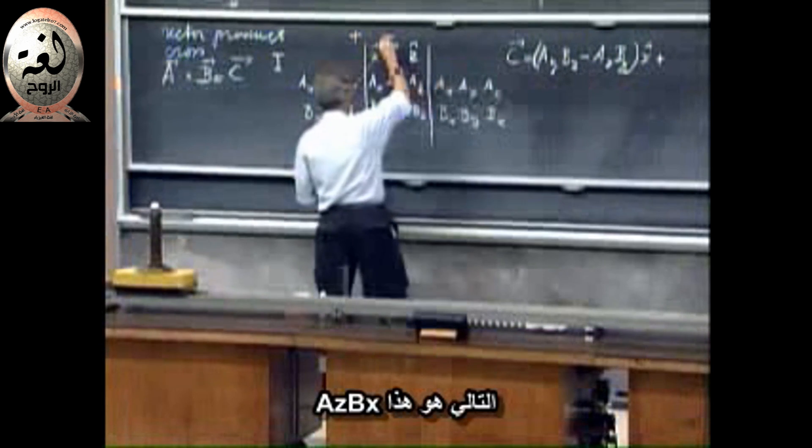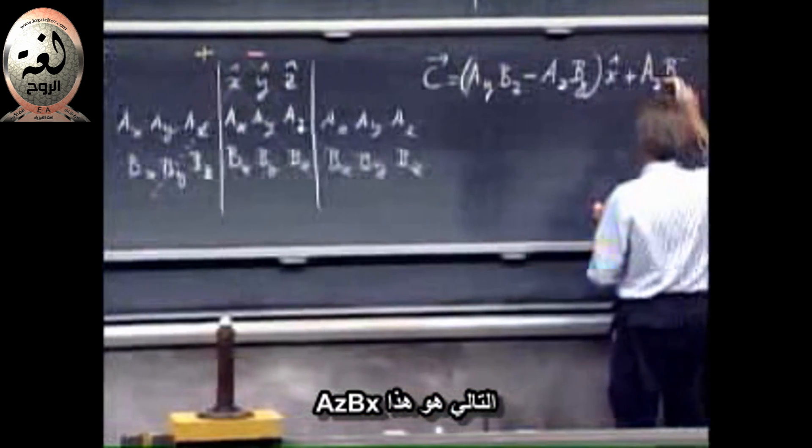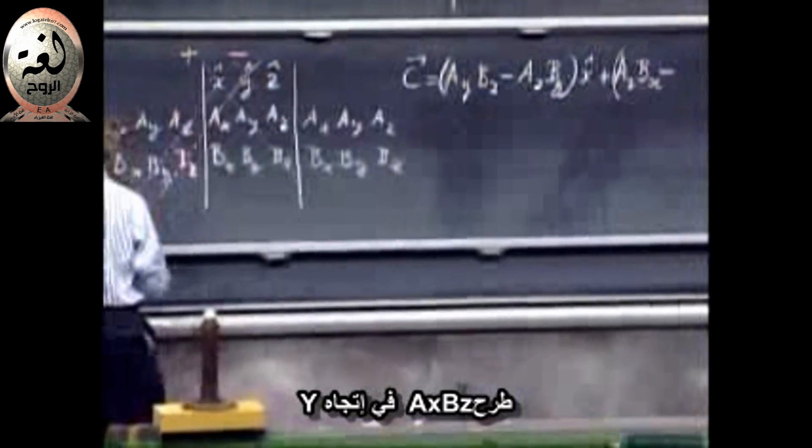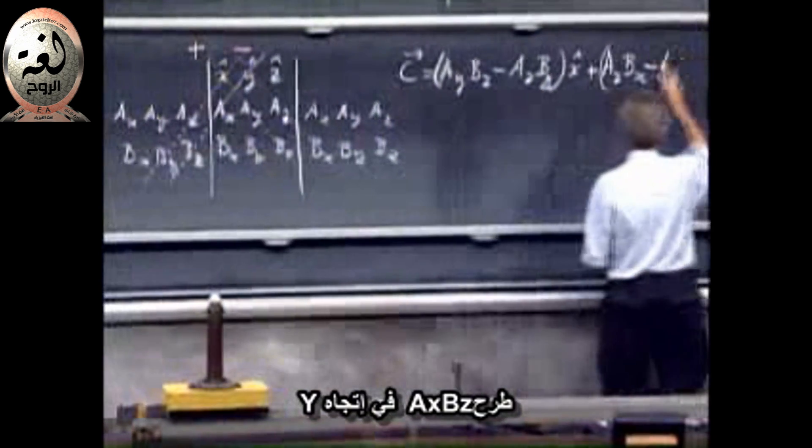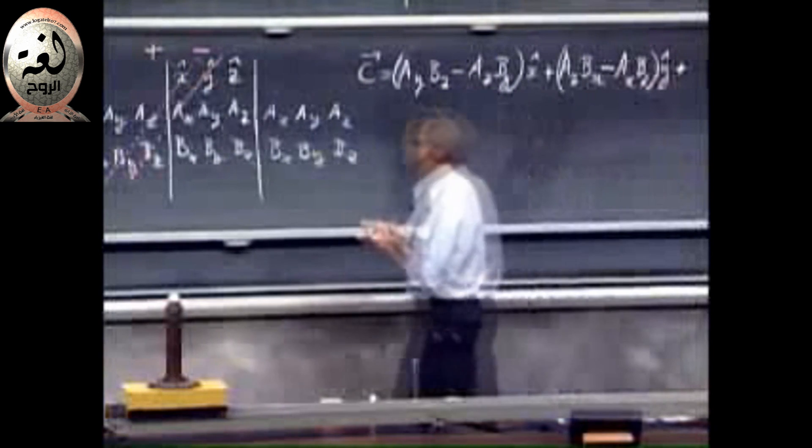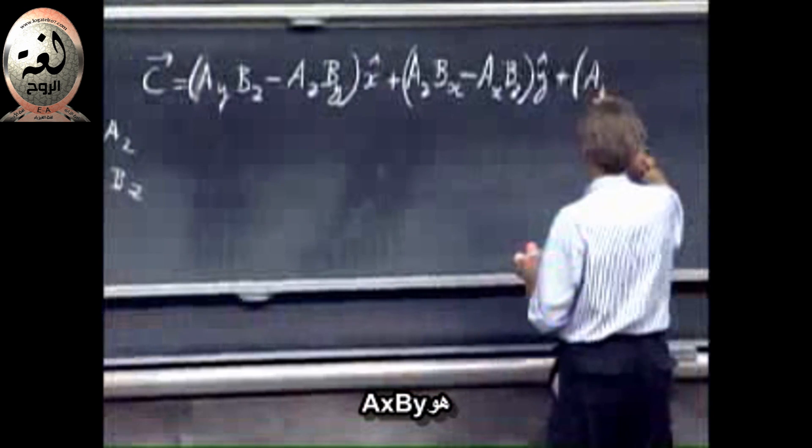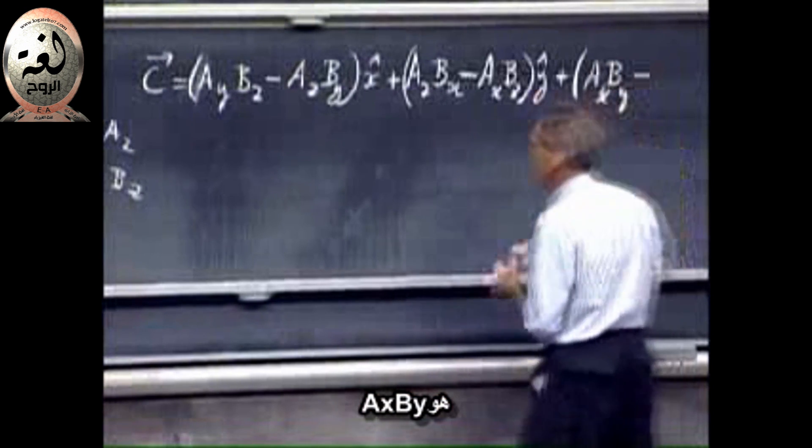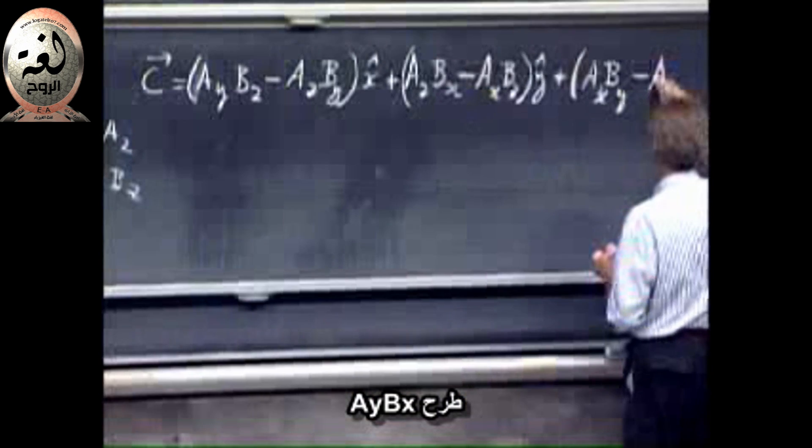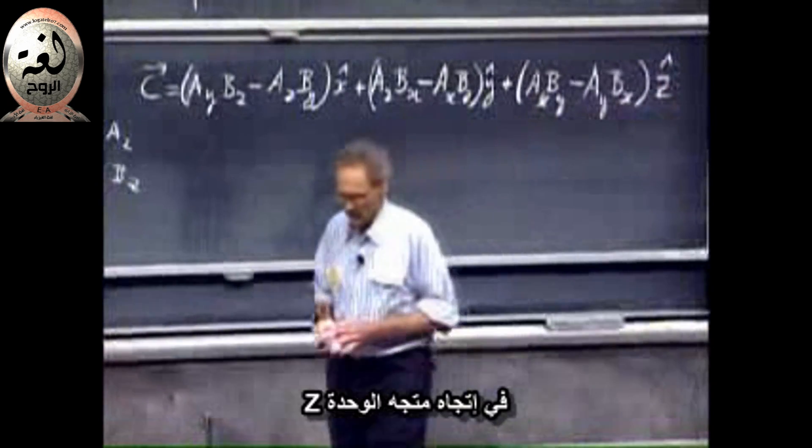The next one is this one. A-Z-B-X minus this one. A-Z-B-Y minus A-Y-B-X. In the direction of the unit vector Z.